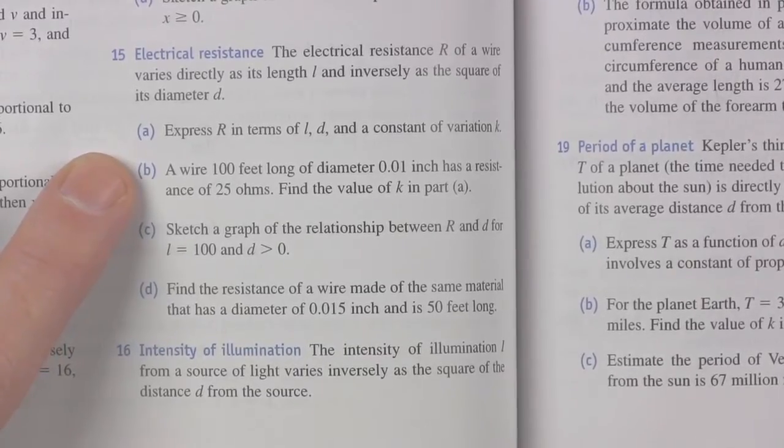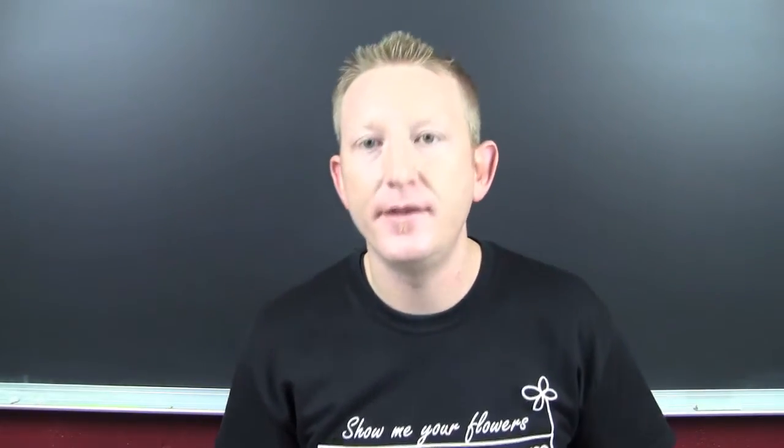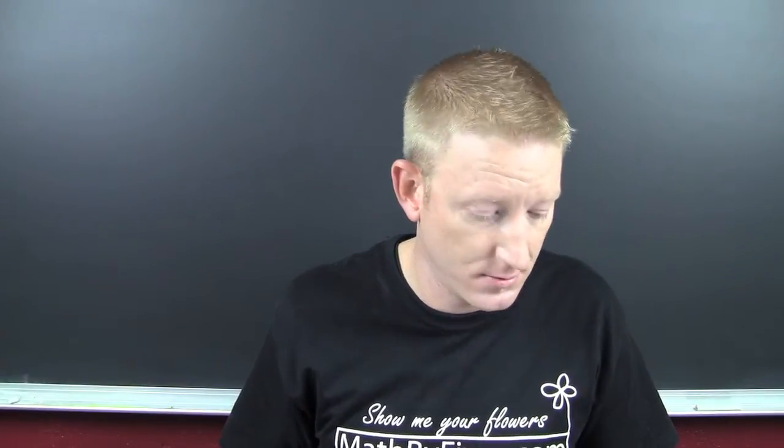Okay! A wire, 100 feet long, of diameter 0.01 inch, has resistance 25 ohms. Find the value of K in part A. Ah! There they want you to find K. Okay! So then you set up the general and you answer the question.